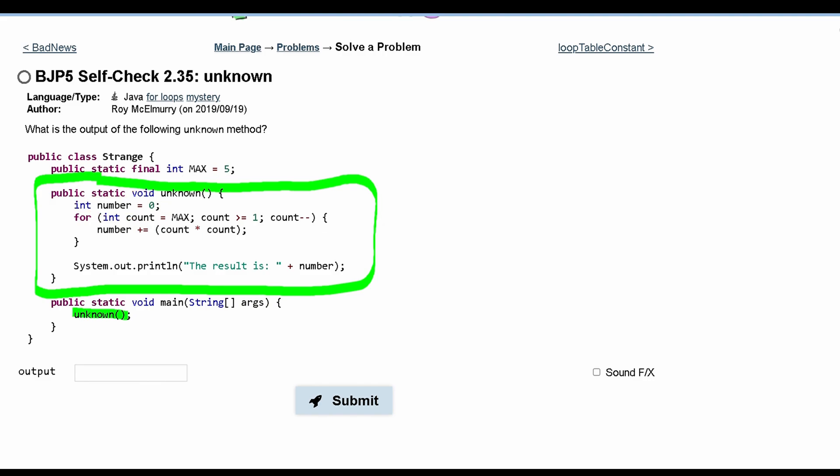Next we have a for loop where we have int counter is equal to max. So count is going to be 5. It's going to start as 5. And then this is going to run as long as count is greater than or equal to 1. And then count is being decremented every single time this for loop executes.